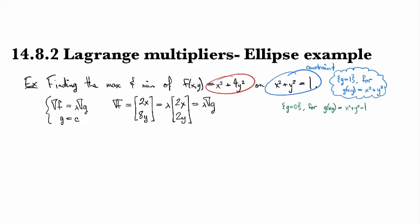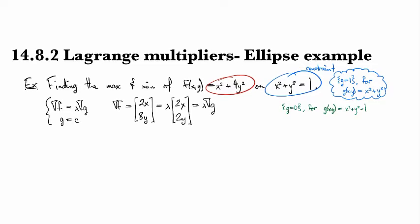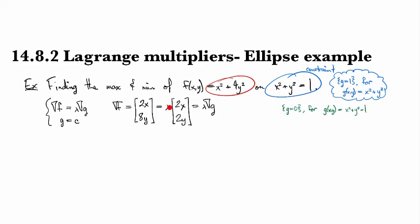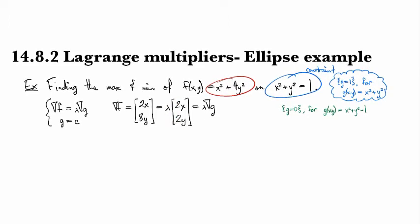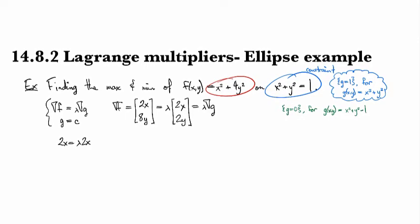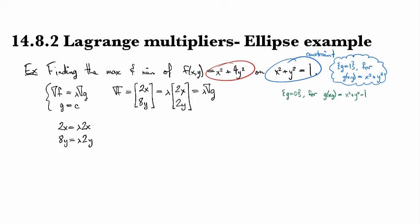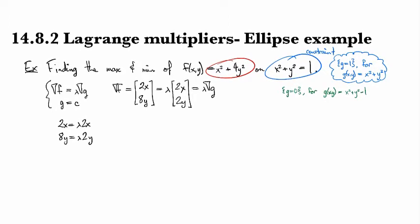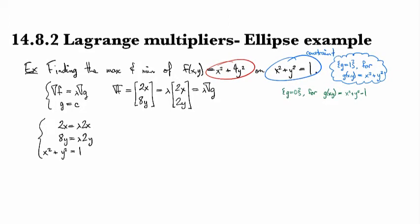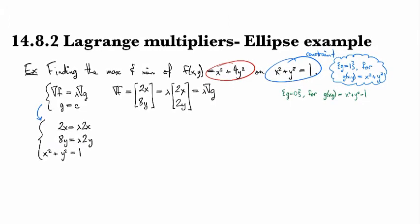This is supposed to equal lambda times the gradient of g, and g is x squared plus y squared. So I have 2x, 2y for my gradient of g. And so then my system becomes, we're comparing the first coordinate here with the first coordinate here. Notice I'm going to multiply the lambda in to each coordinate, gives me 2x equals lambda 2x, 8y equals lambda 2y, and then I've also got my g equals c equation, which is x squared plus y squared equals 1. So there's my new and updated system after I do the computations.